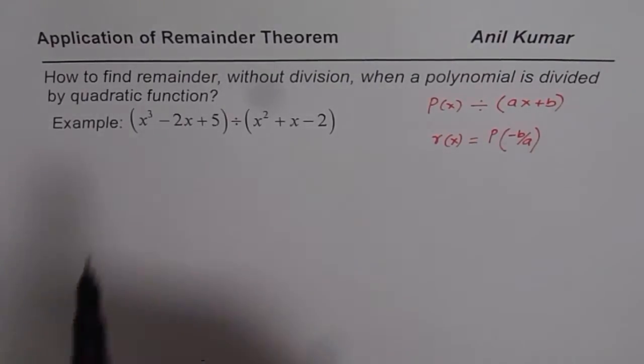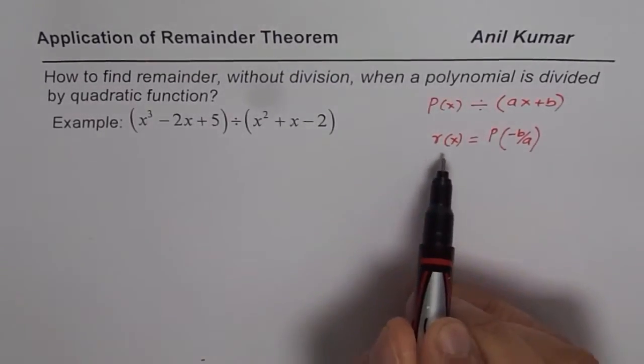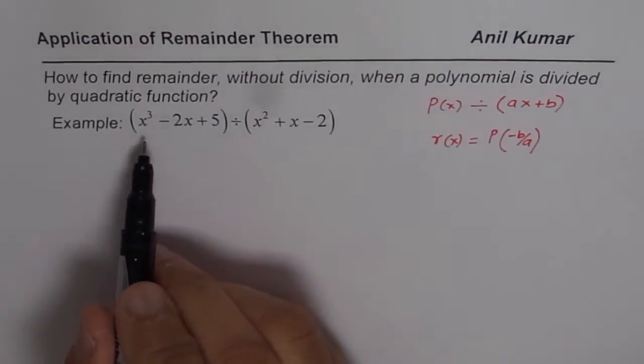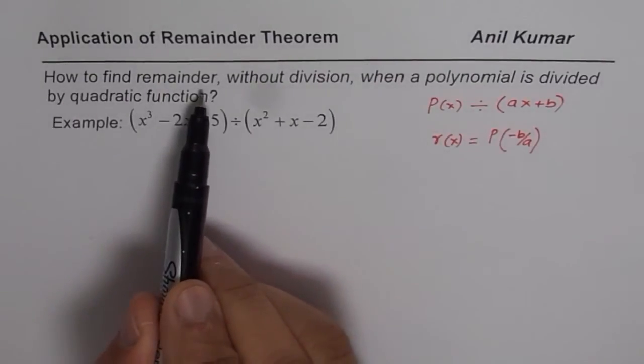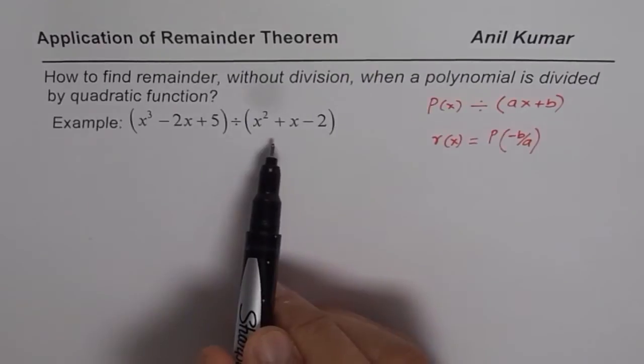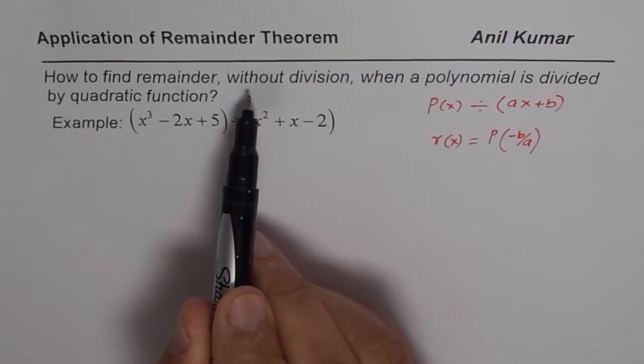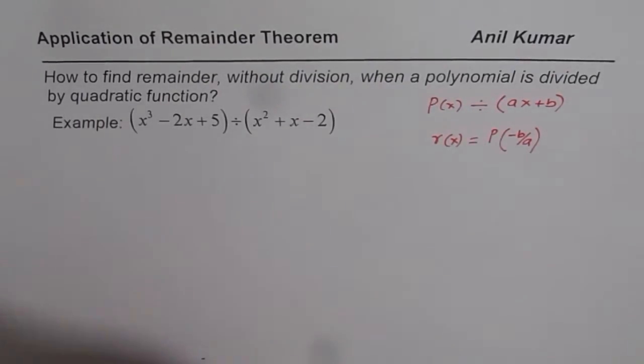Now the question is, if you have to divide a polynomial by a quadratic function, then how to find the remainder? There are many ways to do it, and here is probably the simplest way. Let's begin with this question: how to find remainder without division when a polynomial is divided by a quadratic function?